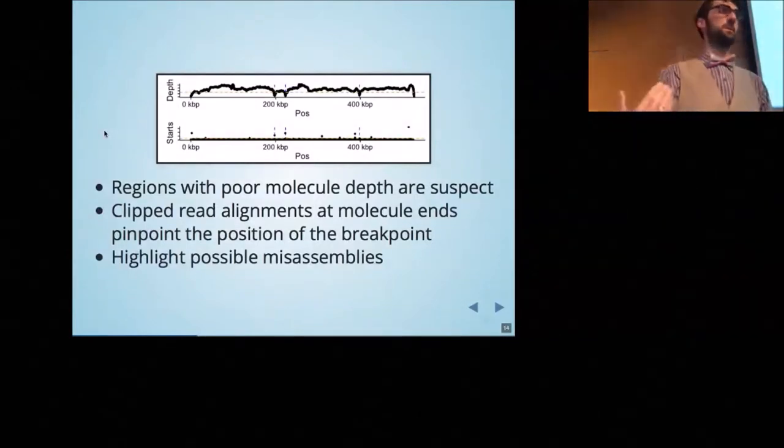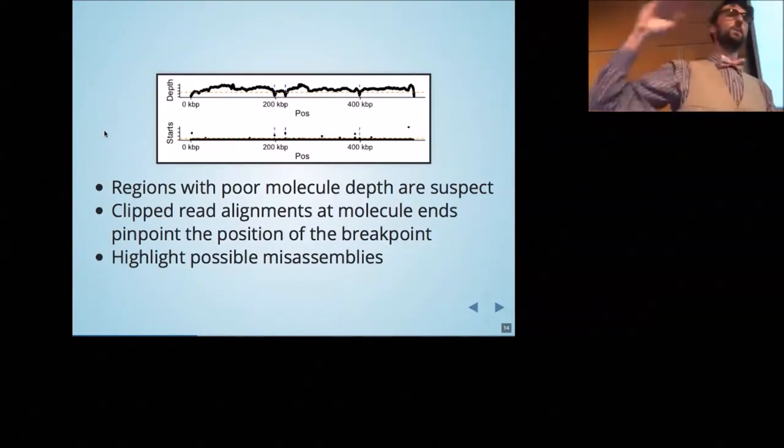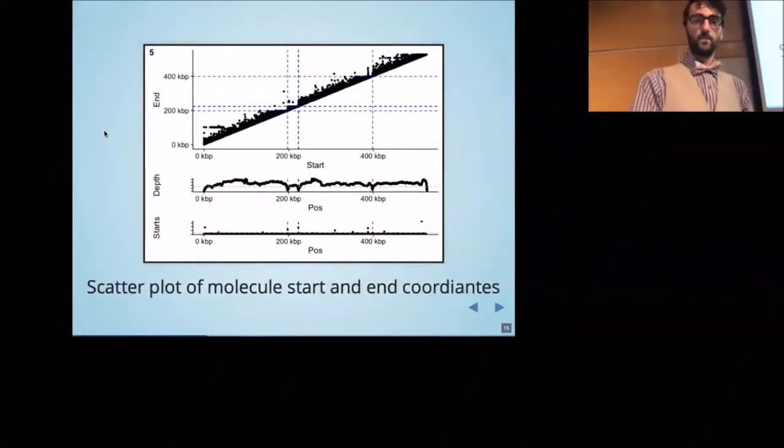This is a plot of what the data looks like—what the algorithm interprets. The top track there is the physical molecule depth of coverage, and where there's a big dip is a position of a potential misassembly. Now that dip actually covers a large region, so the misassembly could be anywhere in there. Within that region, you look for clipped read alignments at the ends of the molecules. If the molecule ends at a read that happens to be soft clipped by the alignment software, that's an indication that there might be a misassembly at that very base position. Looking for multiple of these molecules at the same position helps you refine the position of the misassembly down to a base pair accurate position.